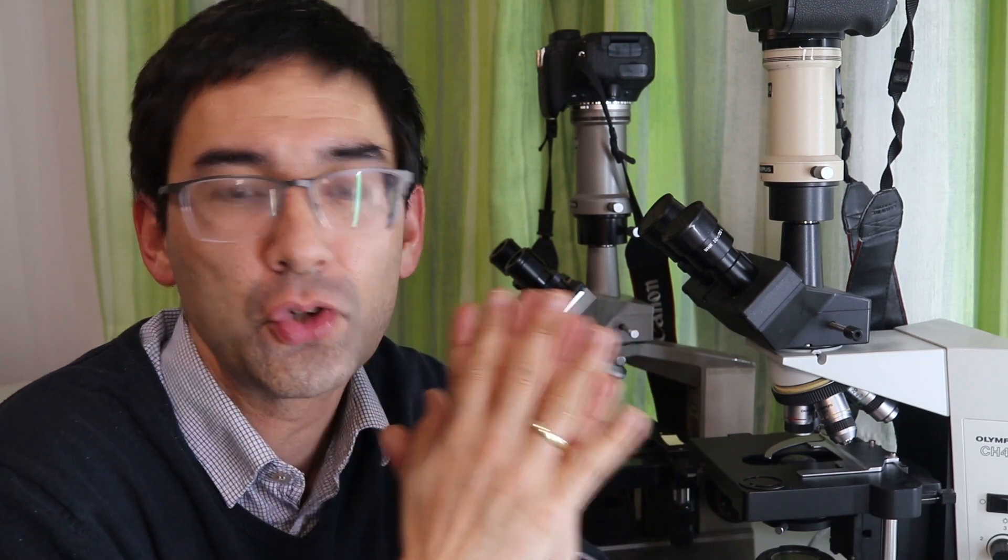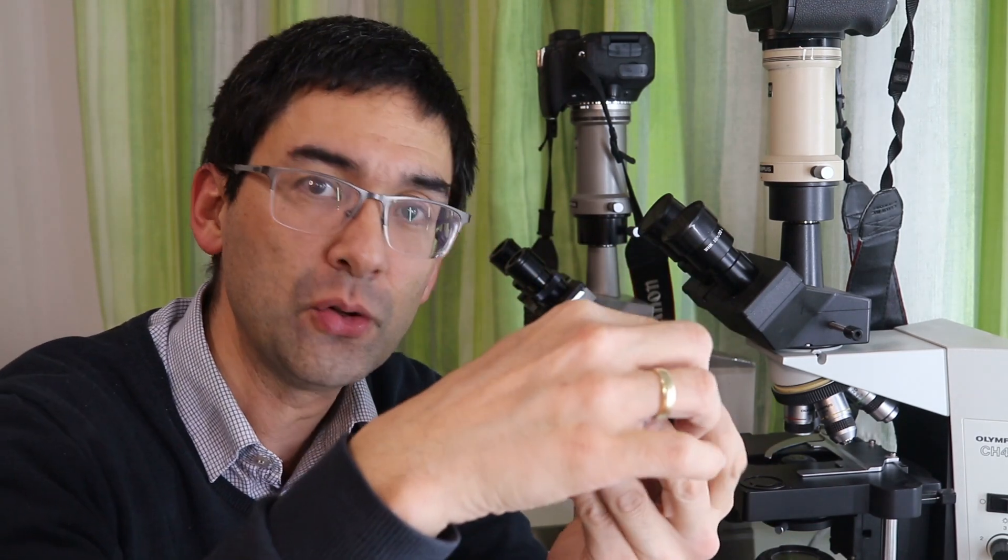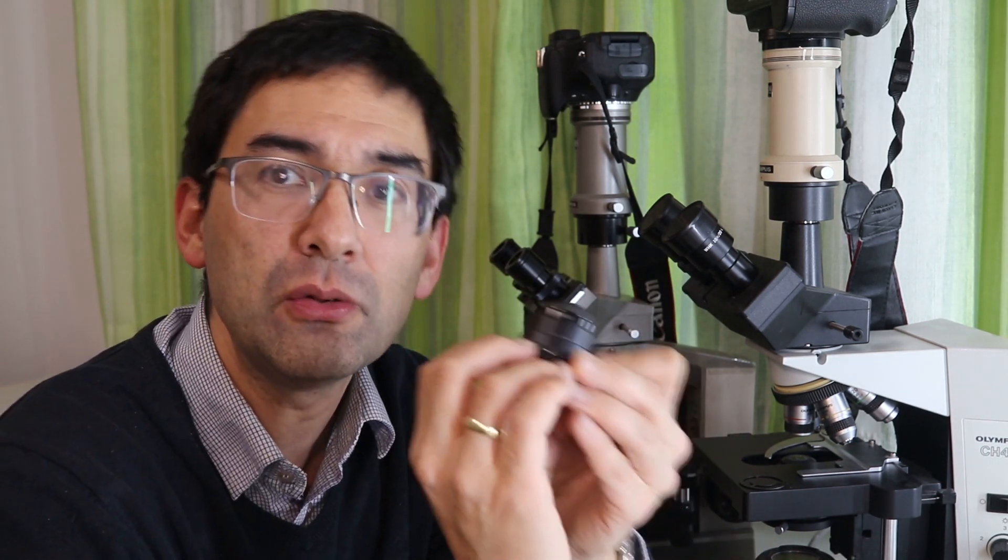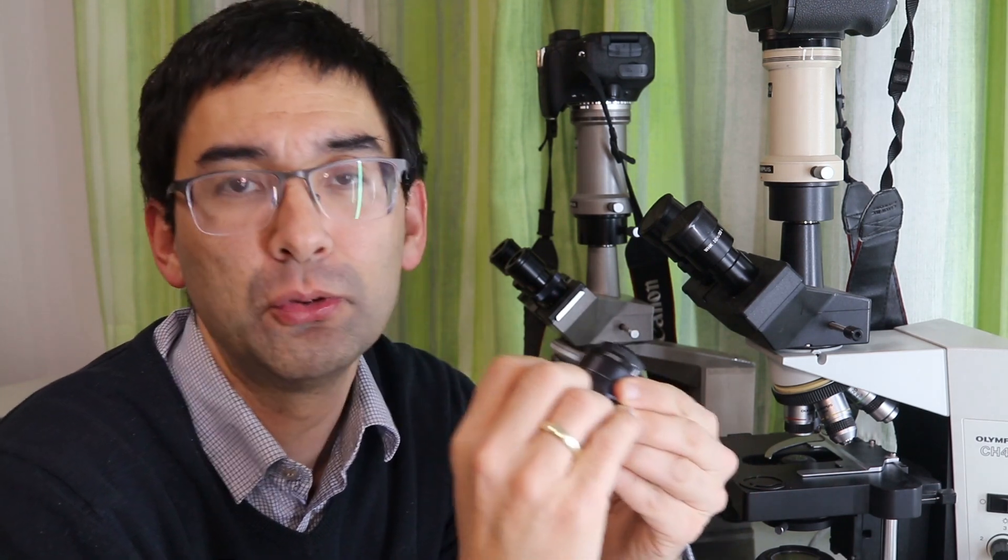Basically if you buy yourself a microscope, get one, get yourself one that has a condenser on the bottom and also one that has a mechanical stage because you need to have a condenser like this to be able to do dark field.